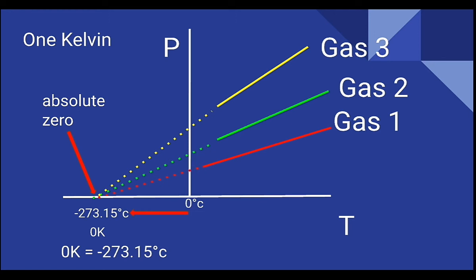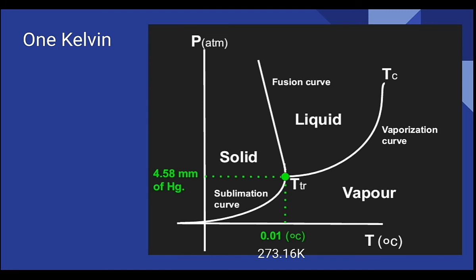Now let us discuss the triple point of water. Triple point of water means that at the temperature 0.01 degrees Celsius and pressure 4.58 mm of Hg, all the states or phases of water—solid, liquid, and gas—can be achieved at the same time.